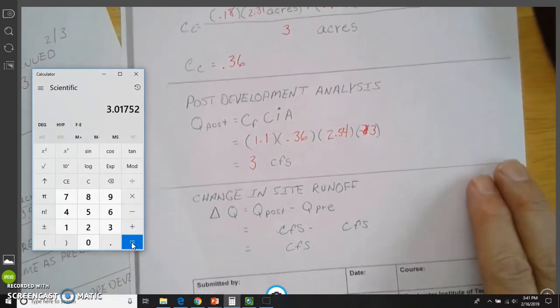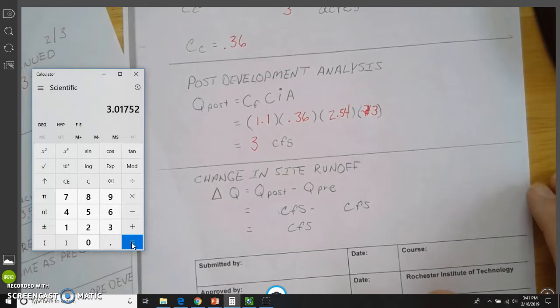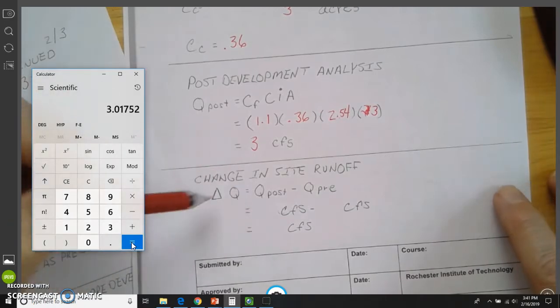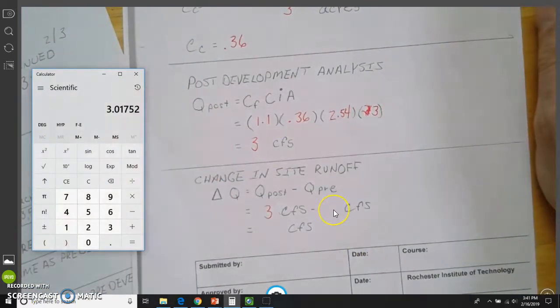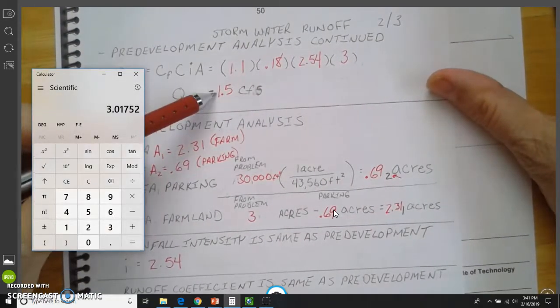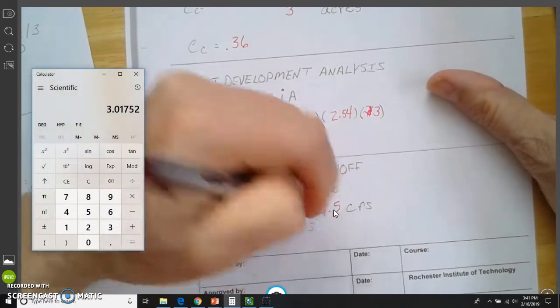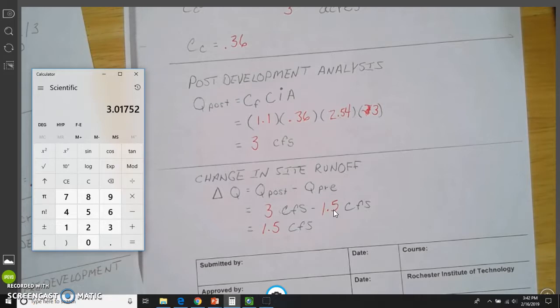So we are going to calculate the change in post versus pre-runoff, and the runoff for post is the first thing, and that is 3. That's this value that we just calculated here. The pre-runoff was at the top of this page right here. That's 1.5 minus 1.5. So our change is 1.5 cubic feet per second of runoff. That is the amount of water that's going to need to be retained on the site in some way, shape, manner, or form.